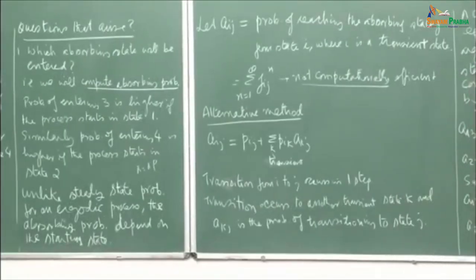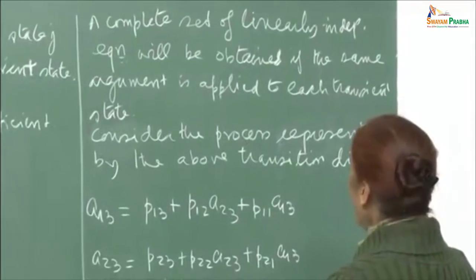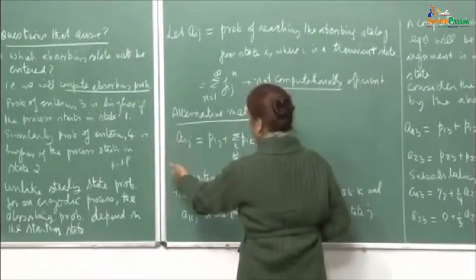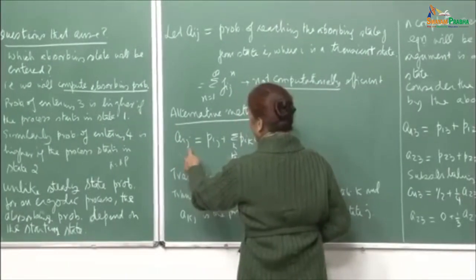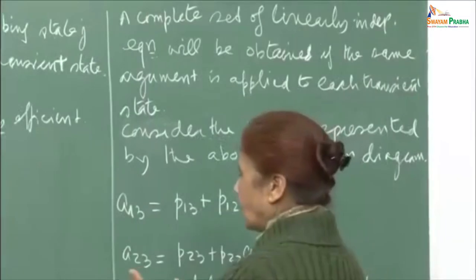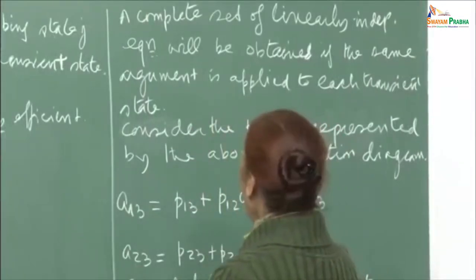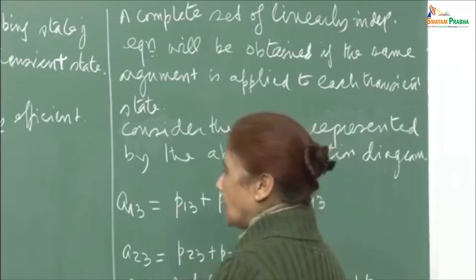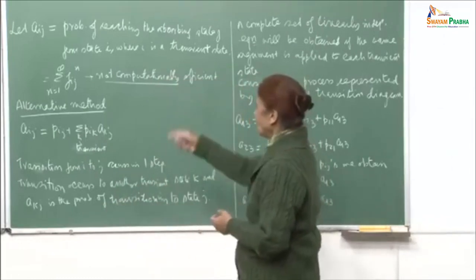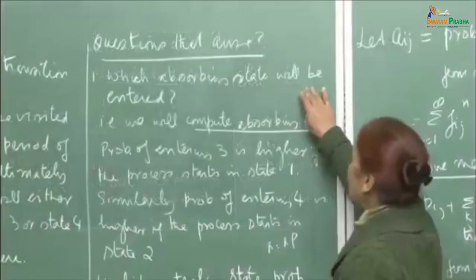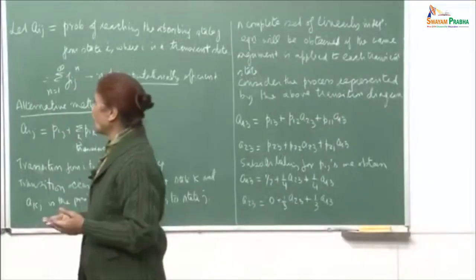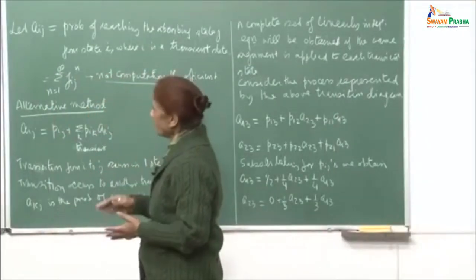An alternate method: if you want to compute A_ij, then the transition either takes place in one step with probability p_ij, or you transition from i to another transient state k with probability p_ik, and then a_kj is the probability of ultimately transitioning from transient state k to absorbing state j. A complete set of linearly independent equations is obtained by applying the same argument to each transient state. Solving these gives all a_ij values, answering which absorbing state will be entered and with what probability from each starting state.